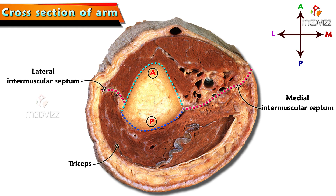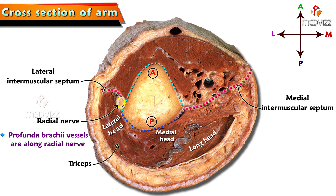This is the triceps muscle. Most superficial is the long head, then the medial head and lateral head. This is the lateral head and this is the medial head of triceps. We can see the radial nerve here, which is along the lateral intermuscular septum, and the vessels here are the profunda brachii vessels, which are along with the radial nerve.